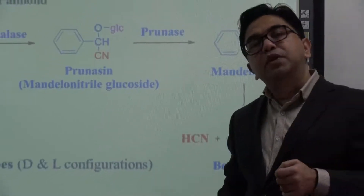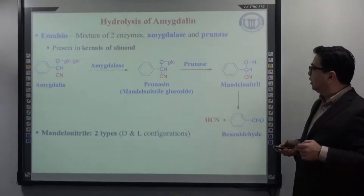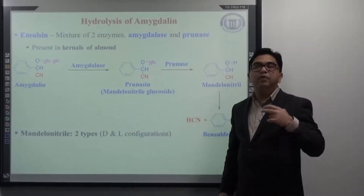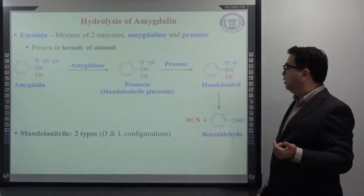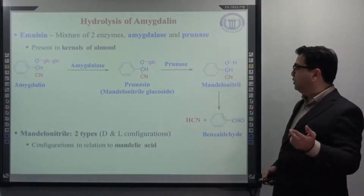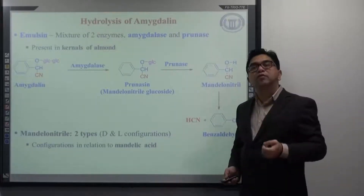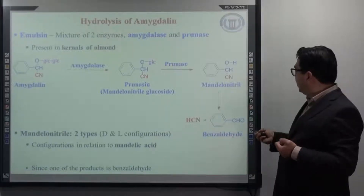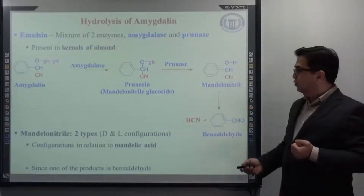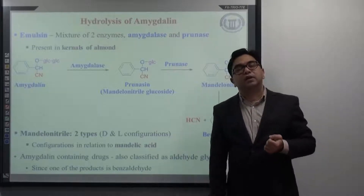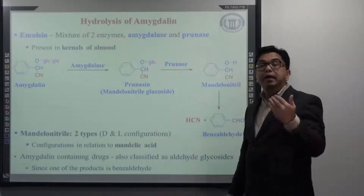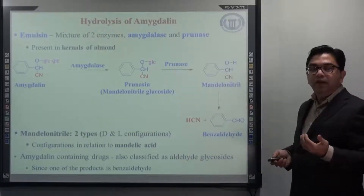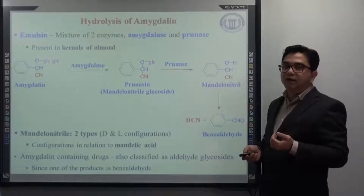Mandelonitrile is of two types based on its configuration: D-mandelonitrile or L-mandelonitrile. Since one of the products is benzaldehyde, amygdalin-containing drugs are also classified under aldehyde glycosides. Sometimes in some textbooks you may find amygdalin listed as an example of an aldehyde glycoside.